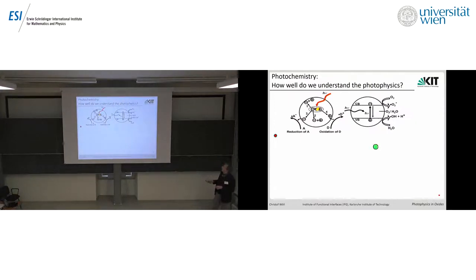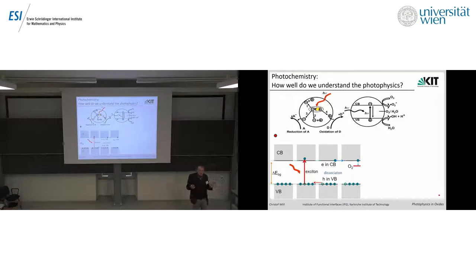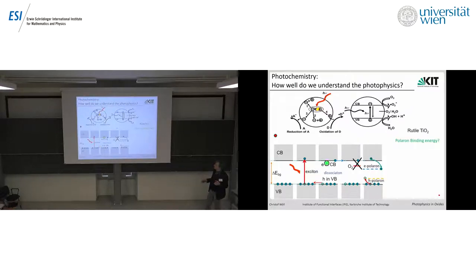If you look at typical reaction schemes in review papers on photochemistry on photoactive oxides, they typically look like this: you excite electrons in the conduction band to store energy. In more detail, first you create an exciton, then somehow the exciton is split into an electron and a hole, and then you use this electron in the conduction band to activate molecules on the surface. Actually, this is not quite correct if you look at the photophysics. If you split the exciton to have a hole and an electron — or two polarons — you lose quite a bit of energy because these binding energies are quite substantial.